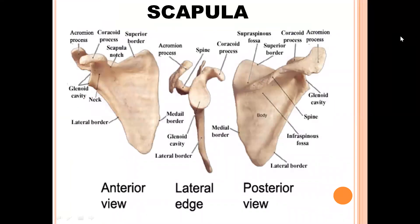Firstly, I will tell you what is scapula. Scapula is a flat bone present in the posterior part of the upper thoracic region. It contains two surfaces: costal surface or anterior surface, and dorsal surface or posterior surface. It has three processes. First is the acromion process, which articulates with the clavicle to form the acromioclavicular joint. Second is the coracoid process. Third and last is the spinous process, which divides the dorsal surface into an upper small part and a lower bigger part.